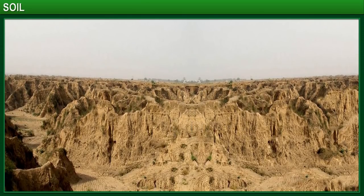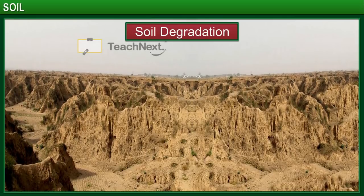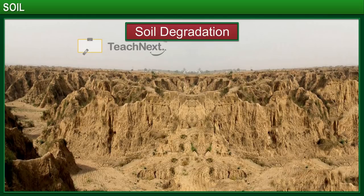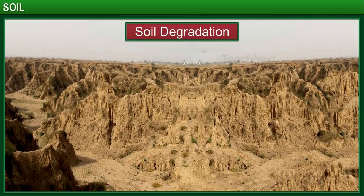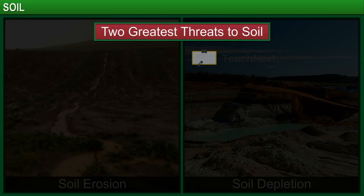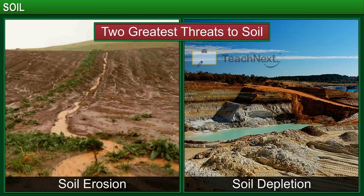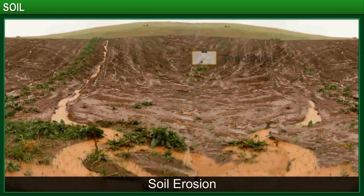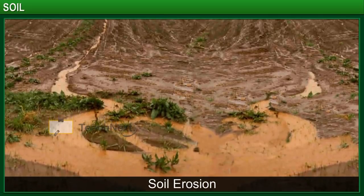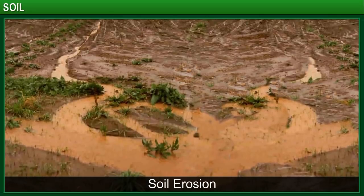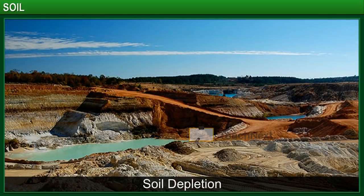Like land degradation, soil degradation is also an area of concern. This degradation is caused by activities of human beings as well as some natural activities. The two greatest threats to soil come from soil erosion and depletion. Soil erosion occurs when soil and rock particles are carried away by wind, water, or ice and deposited in another location. Soil depletion takes place when the nutrients in soil are removed and are not replaced, affecting the quality and fertility of the soil.